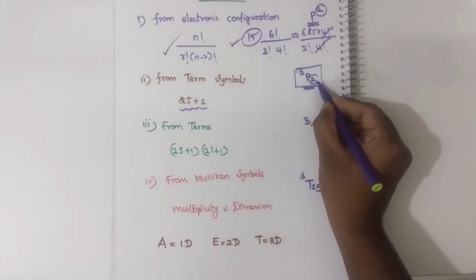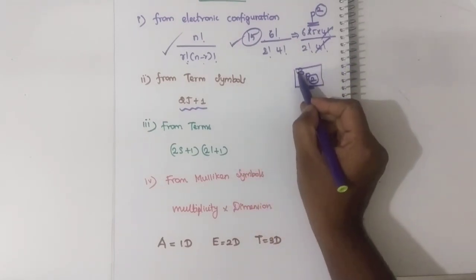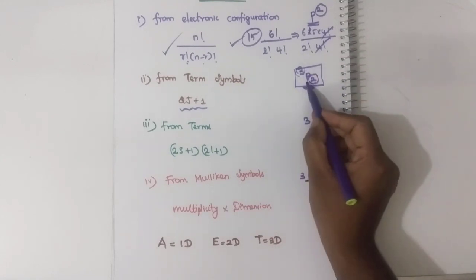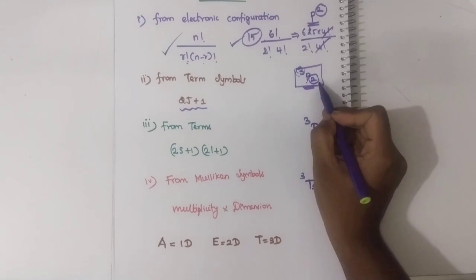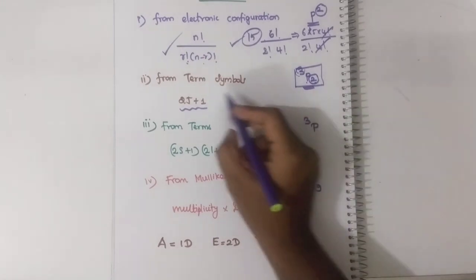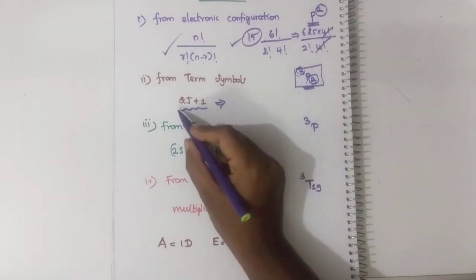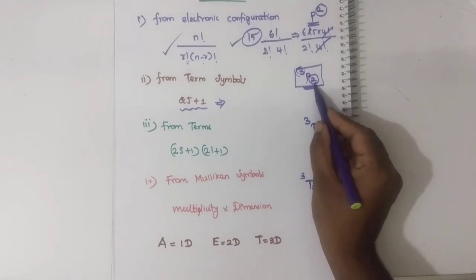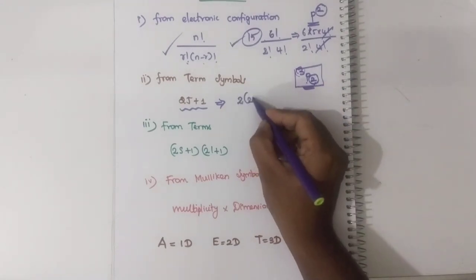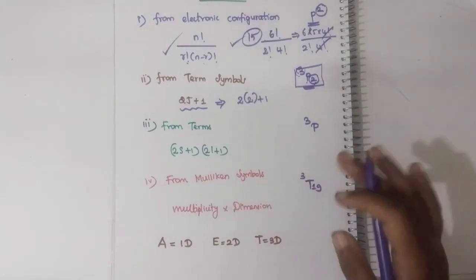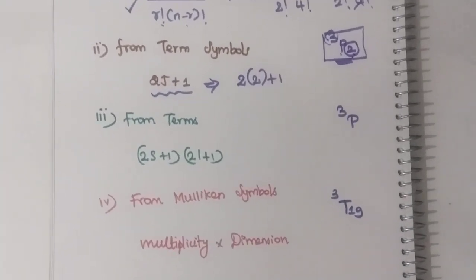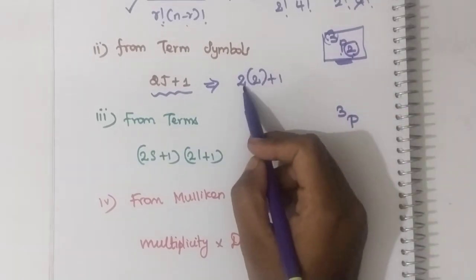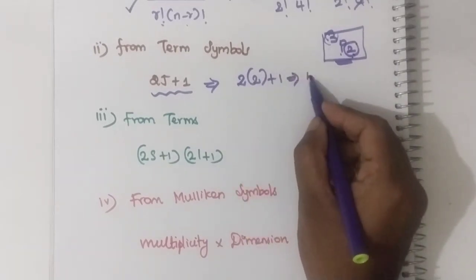What is J here? In a term symbol like 3P2, this 3 is the spin multiplicity, P is nothing but capital L (the orbital angular momentum), and J is here - the subscript 2 is J. So the formula is 2J plus 1. For 3P2, J equals 2, so 2 into 2 plus 1 gives us 5 microstates.